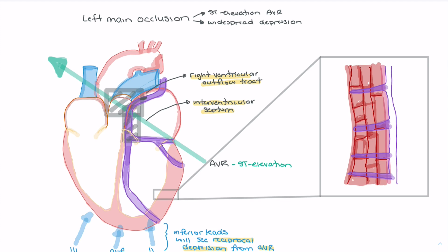That still doesn't explain why we have ST depression throughout our precordial leads — why lateral, septal, and anterior leads show ST depression. This has to do with the fact that we're reducing blood supply to those areas. When an occlusion is forming in the left main coronary artery, blood supply downstream is reduced. This is not a full occlusion with complete necrosis of all tissue, which would produce ST elevation in most leads.